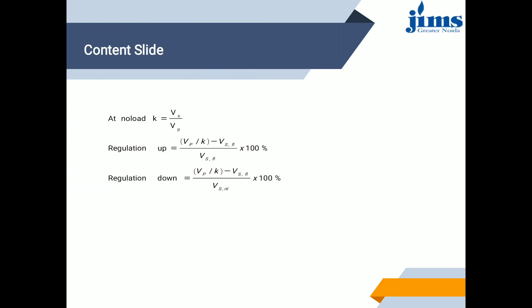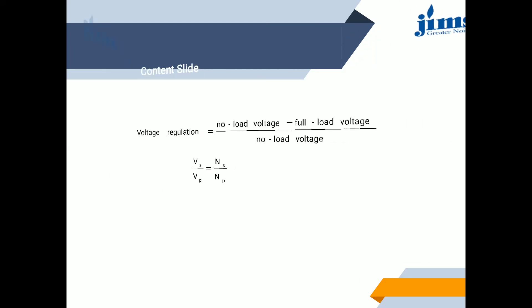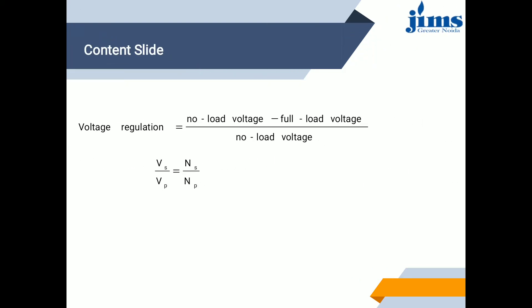At no load, K is the transformation ratio defined as Vs upon Vp, where Vs means secondary voltage and Vp means primary voltage. Regulation = (Vp/K − Vs_n) / Vs_n × 100%. Therefore, voltage regulation is no-load voltage minus full-load voltage, upon no-load voltage.